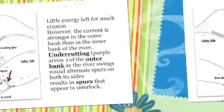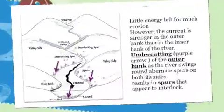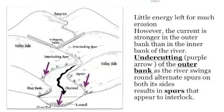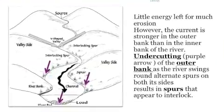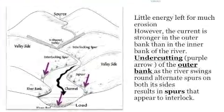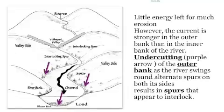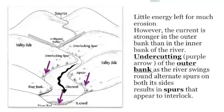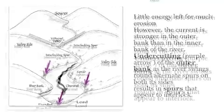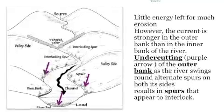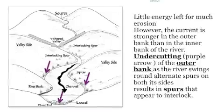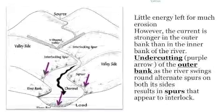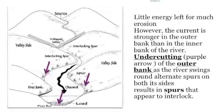Undercutting (purple arrow) of the outer bank occurs as the river swings round alternate spurs on both sides of the river. This results in the formation of spurs that appear to interlock.